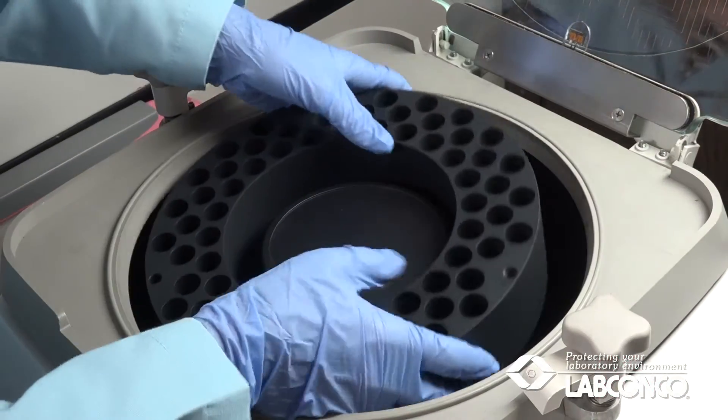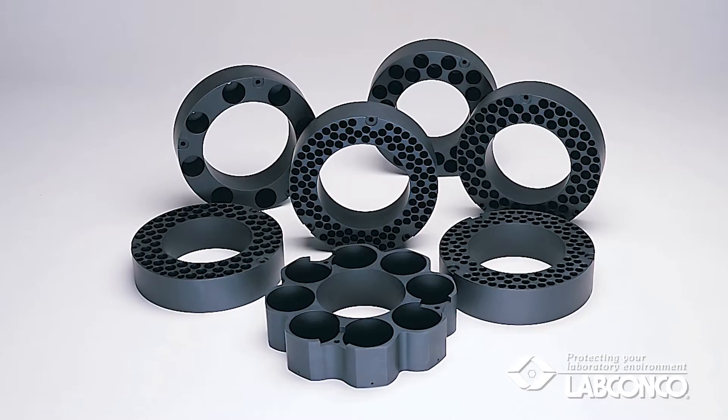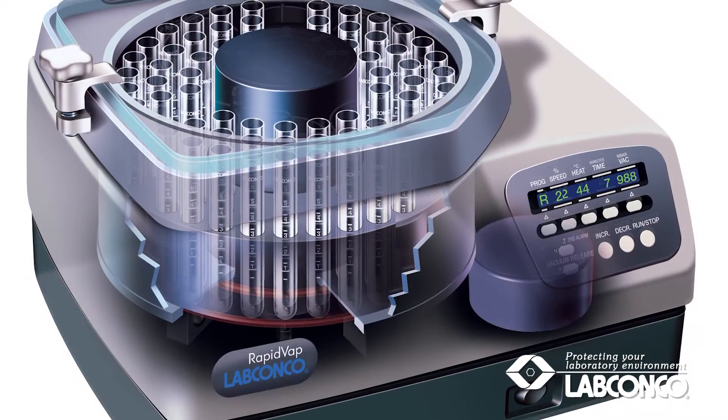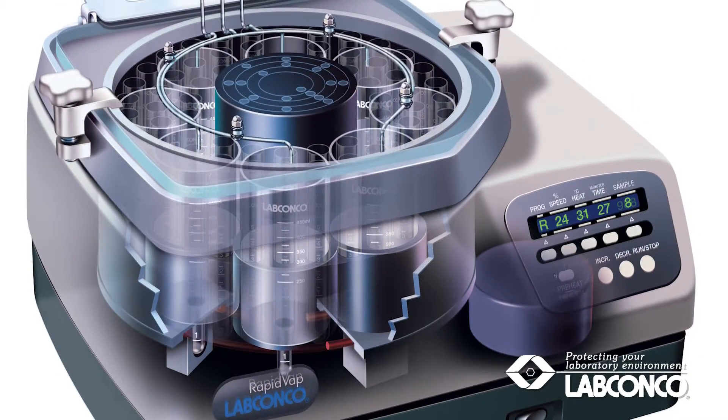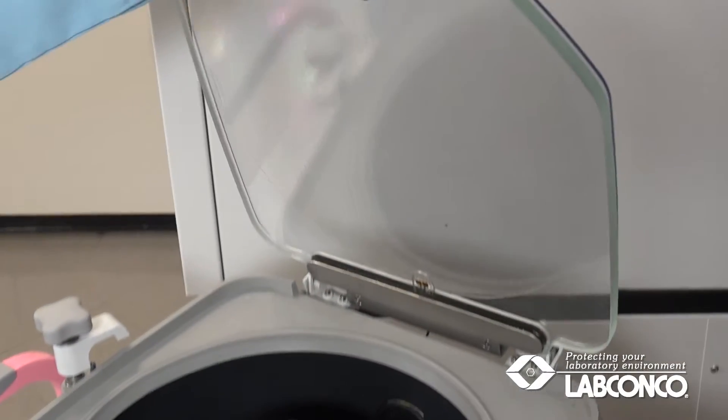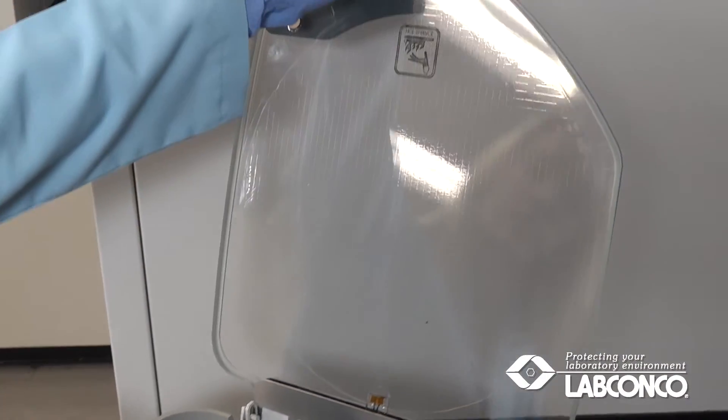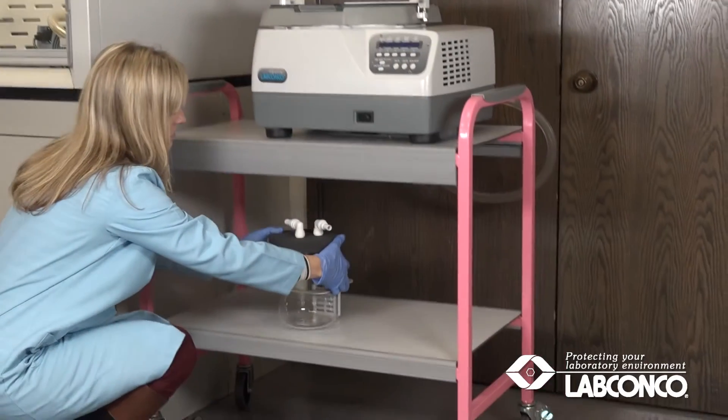The vacuum system requires a block. Several blocks designed to hold a variety of glassware sizes are available. When using low boiling point solvents, a lid heater is recommended to prevent moisture from condensing on the lid.